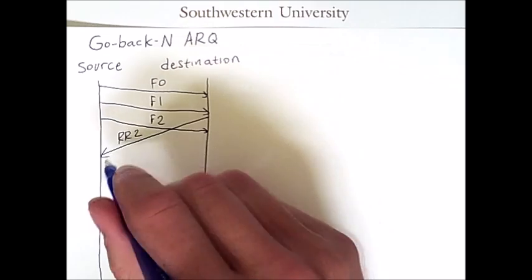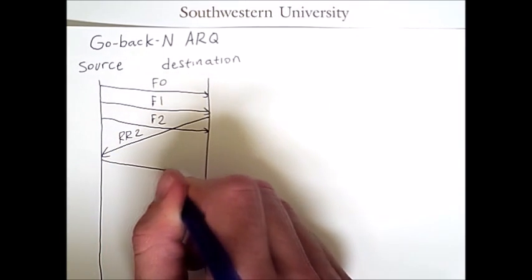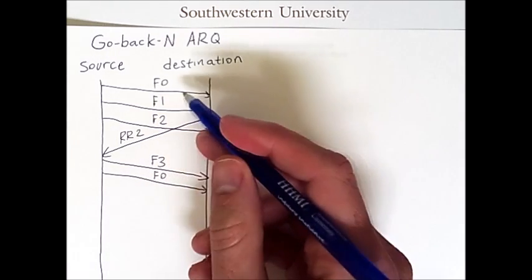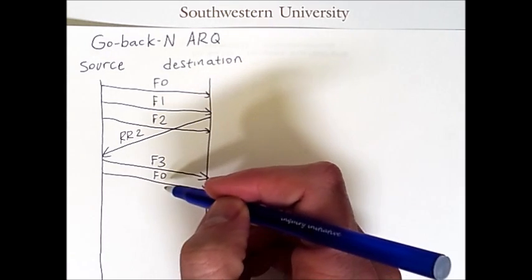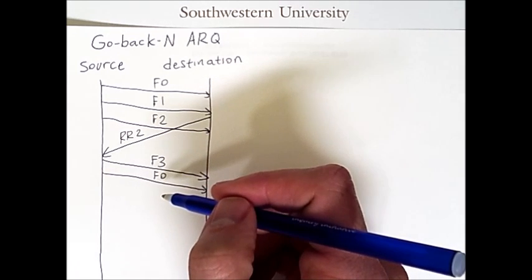So once this is received, it is safe for the source to continue and it will send more frames. And, of course, these numbers wrap around. Once we get to 3, we then go back to 0 and this process keeps looping through the same sequence numbers.